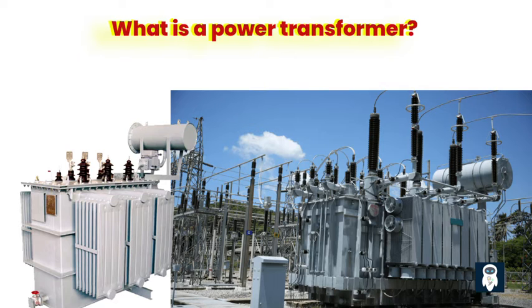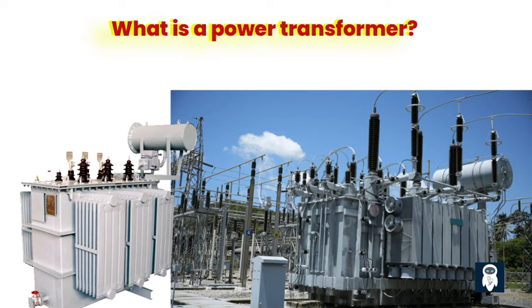Power transformers consist of a laminated iron core and two or more sets of windings. The windings are made of copper or aluminum conductors and are insulated from each other and the core to prevent electrical short circuits. The core is constructed from thin, insulated laminations of iron or steel. The laminated core reduces energy losses by minimizing eddy currents and hysteresis losses. The windings, wound around the core, are responsible for transferring electrical energy from one voltage level to another.